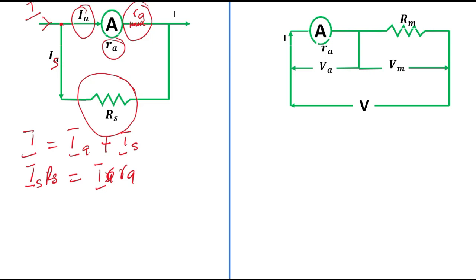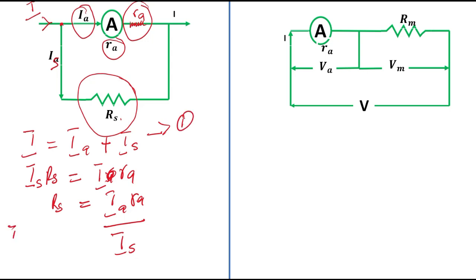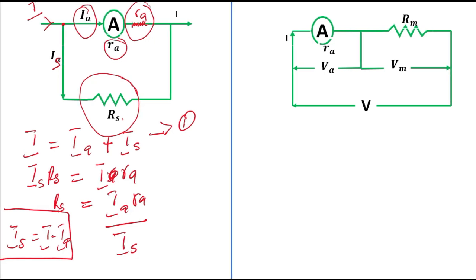If you missed the lesson on resistors in parallel, please check the link in the description below. So, Is × Rs = Ie × Re. To calculate the required shunt resistance: Rs = (Ie × Re) / Is. Since Is = I − Ie, we can also write: Rs = (Ie × Re) / (I − Ie). This is the equation to calculate the shunt required for a particular ammeter given its internal resistance.